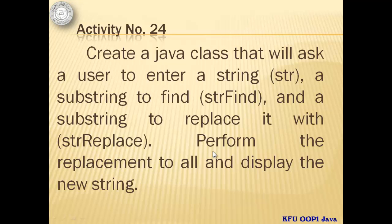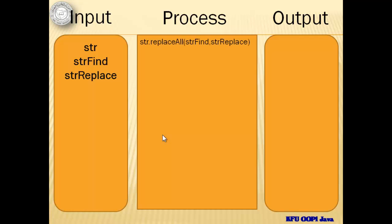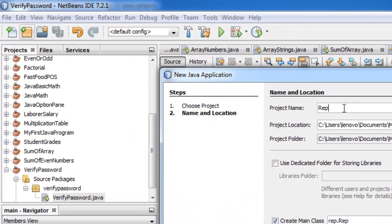Let's finish this series with activity number 24. We will create a Java class that will ask a user to enter a string, a substring to find called strFind, and a substring to replace it with called strReplace. We'll perform all the replacements and display the new string. We will use only the method replaceAll, looking for strFind and replacing it with strReplace. Let's call this project replaceString.